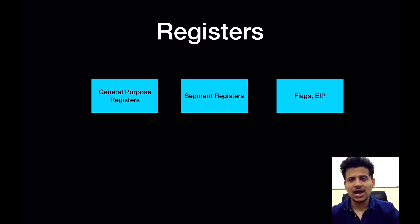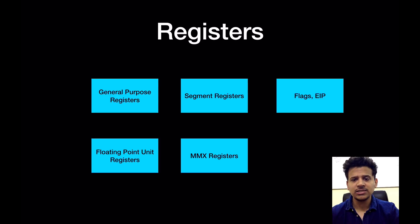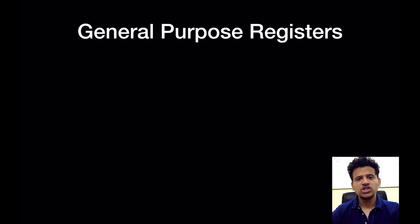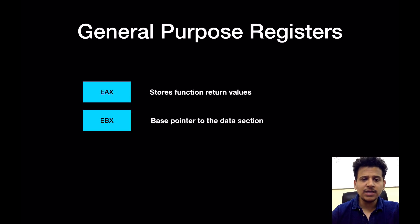Now we'll look at the Intel architecture 32-bit known as IA-32. So there are general purpose registers, segment registers, flags, EIP, floating point unit registers, MMX registers, and XMM registers. By this time, we'll only focus on general purpose registers and EIP. Other registers we'll see when we need them.